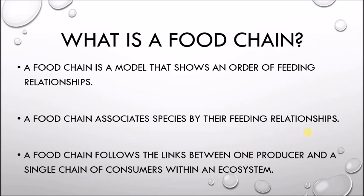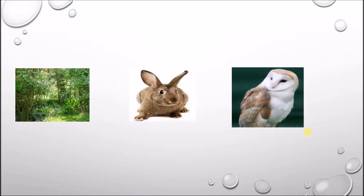We're going to use as our example here a forest ecosystem. We live in the deciduous forest biome, and so we're going to use three representatives for that ecosystem. We have some plants, we have rabbits, and we have owls. These three individual organisms are going to represent that ecosystem, and what we want to do is connect them in such a way to show how energy moves between them and how they're connected through feeding. To do that, we're going to insert some arrows. These arrows represent feeding relationships.